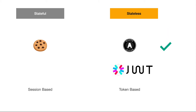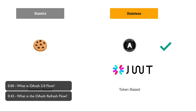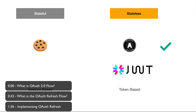OAuth 2 provides a robust mechanism to secure the endpoints. In this video, we'll look at OAuth 2 basics and how it is used in a real application. Specifically, we'll be dealing with how a token is refreshed every so often in applications.